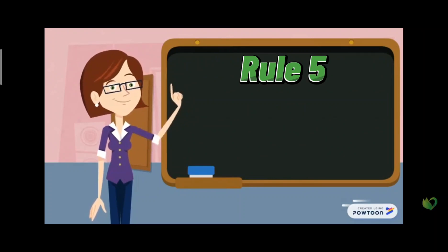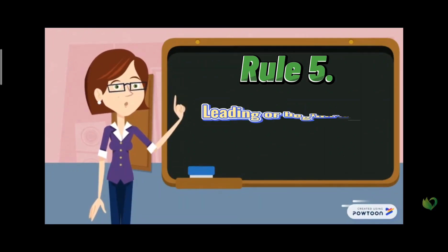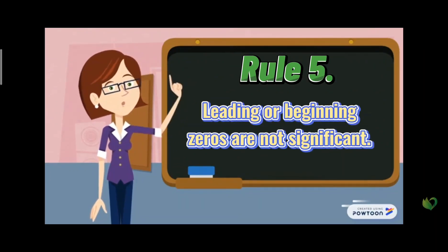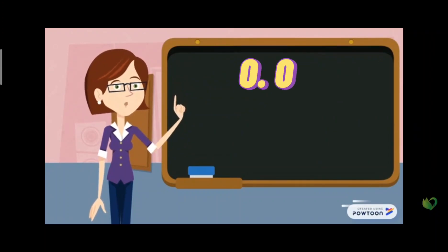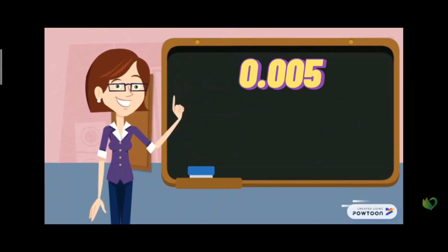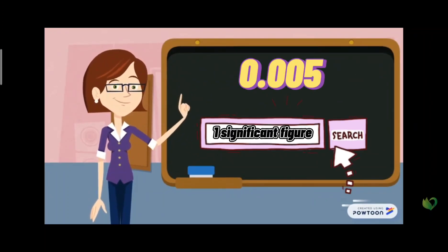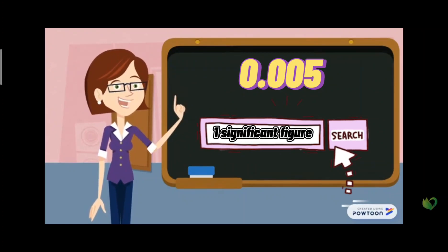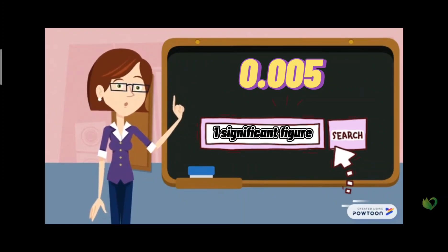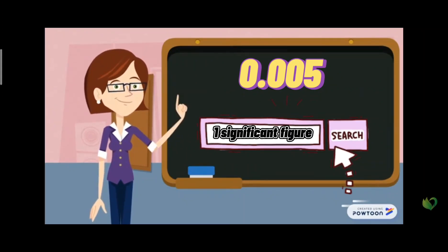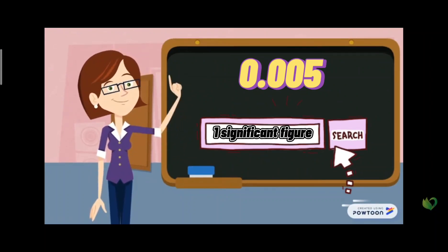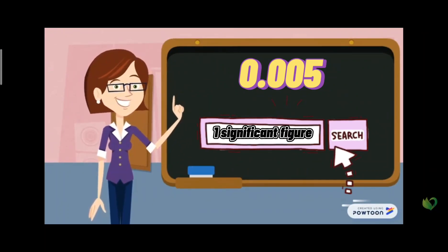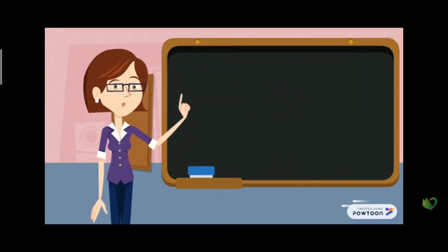Rule number five: leading or beginning zeros are not significant. For example, 0.005 has one significant figure. These three are leading or beginning zeros; they do not count as significant. Only the five counts, so there is only one significant figure.